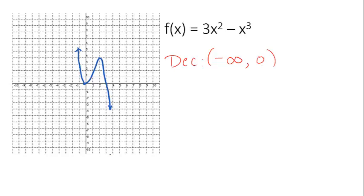At 0, the graph changes direction and begins to increase. The y-values start to go up. So the graph is increasing from 0 until 2, where the graph begins to change direction again. Then the graph begins to decrease at that point, from 2 to infinity.